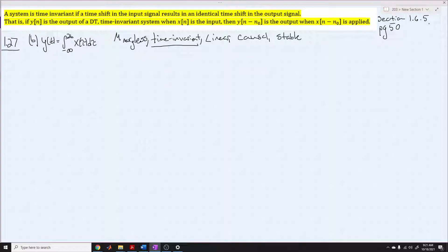Section 1.6.5, page 50, a system is time invariant if a time shift in the input signal results in an identical time shift in the output signal. That is, if y of n is the output of a discrete time invariant system when x of n is the input, then y of n minus n sub nought is the output when x of n minus n sub nought is applied. Here's how we're going to go about this.